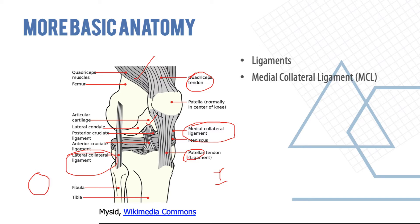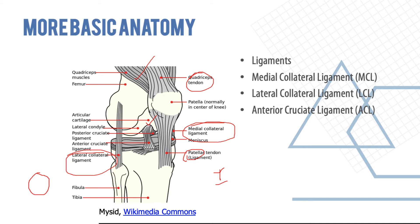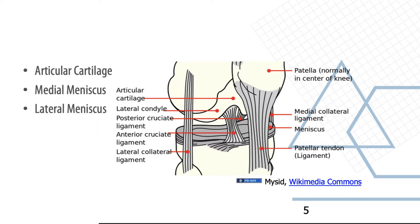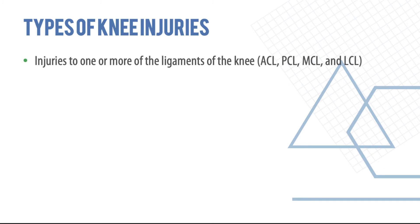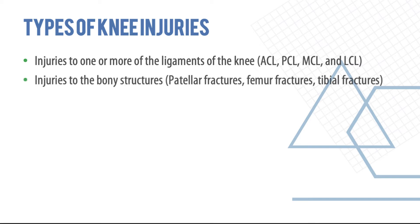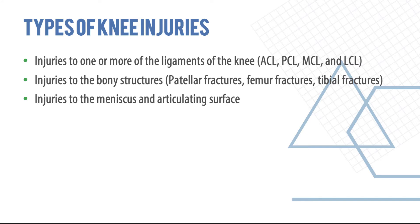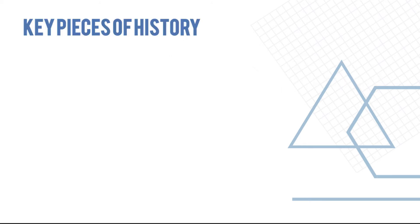The ligaments include the medial and lateral collateral ligaments and the anterior and posterior cruciate ligaments. You also have the meniscus, which is the shock-absorbing hyaline cartilage inside the knee — the medial and lateral meniscus. Injuries of the knee can be to one of the ligaments (ACL, PCL, medial and lateral collateral ligament), fractures (patellar, femur, tibial), or injury to the meniscus and articulating surfaces.